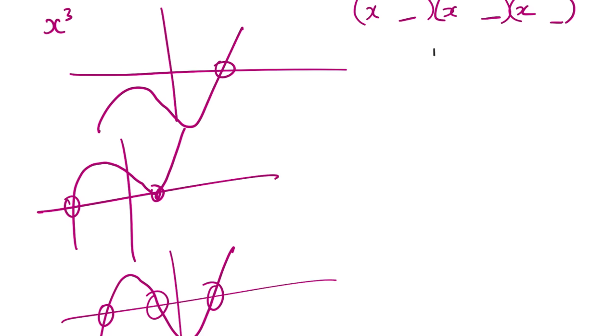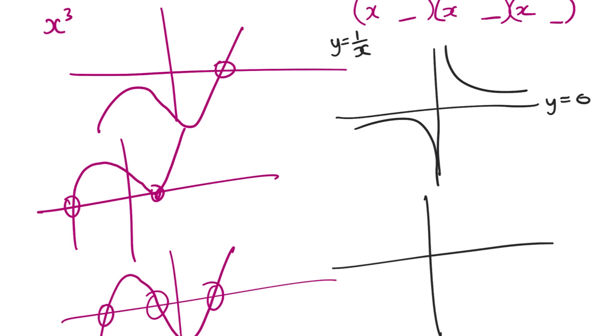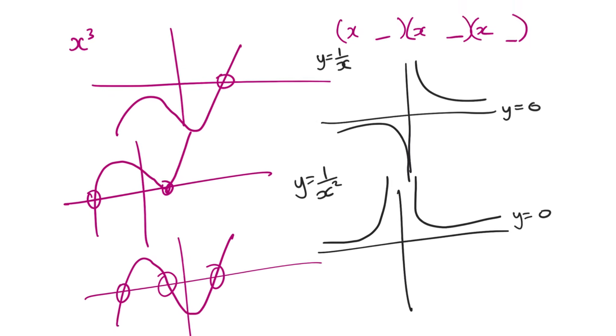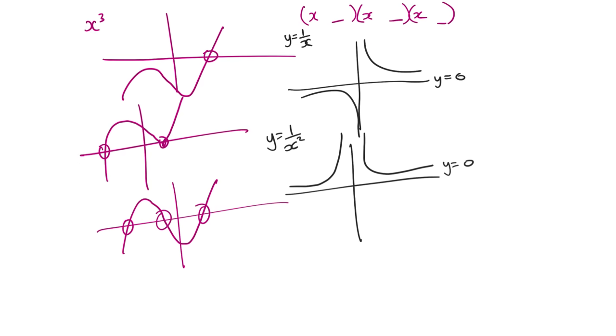What graphs do you need to know? You need to know y equals 1 over x, looks like this, and it has an asymptote on the line y equals 0. You need to know 1 over x squared. And this is going to look like this. And we also have an asymptote on the line y equals 0. Now, my favorite part of graphs and transformations. If it's inside the bracket, who does it affect? X. And what do we do? The opposite. If it's outside the bracket, who does it affect? Y. And what do we do? We do what it says.